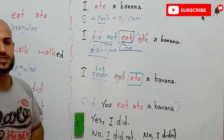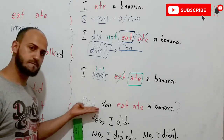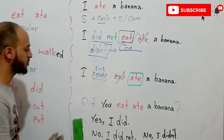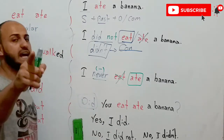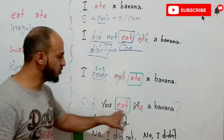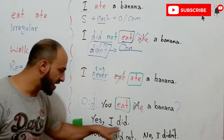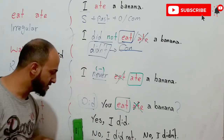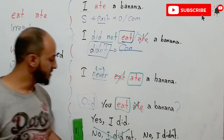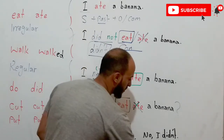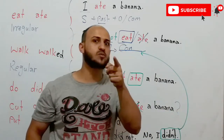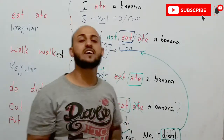Now let's go to the direct question. For questions in simple past, we say: Did + subject + base verb. So: 'Did you eat a banana?' — not 'Did you ate.' Because 'did' already shows past, so you use the base verb 'eat.' The short answers are: 'Yes, I did' or 'No, I didn't' — not 'No, I did not ate.' 'Didn't' is the correct contracted form.